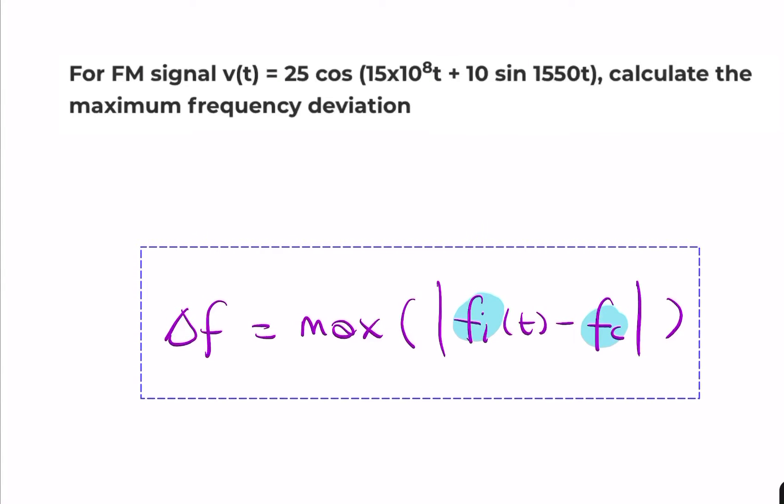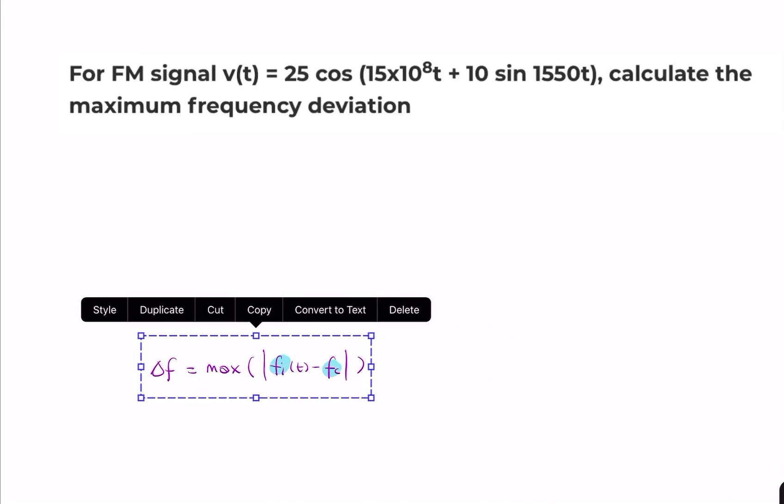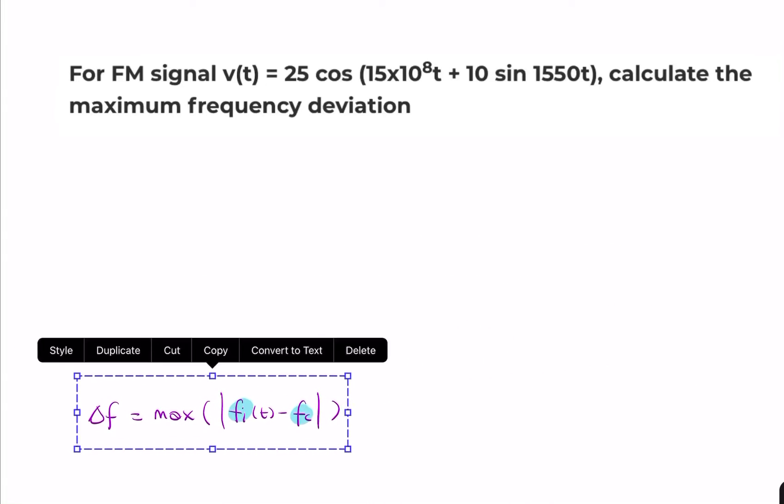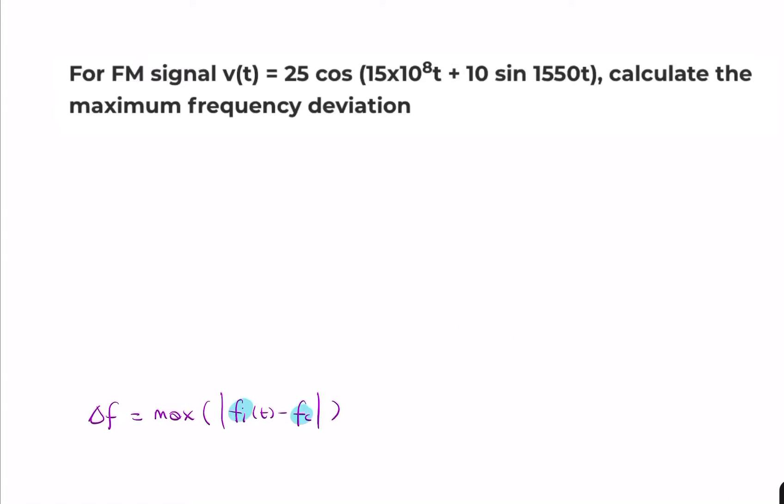Let's get this out of the way. Let's start by finding the instantaneous angle or phase. That's just the bit between the brackets. It's the argument of the cosine. So it's 15 times 10 to the power of 8, t plus 10 sine 1550t.